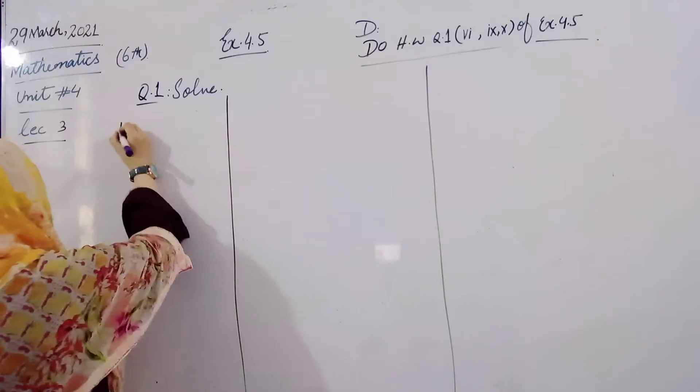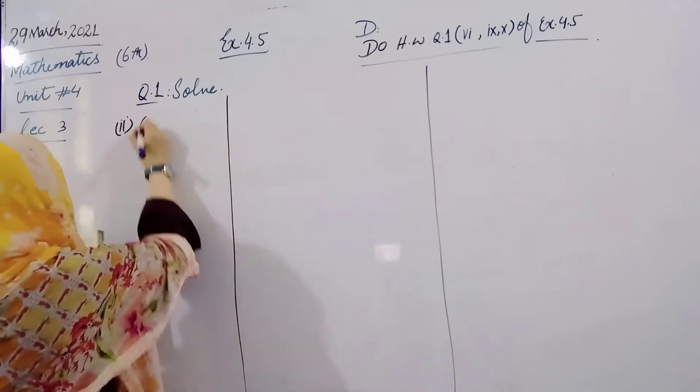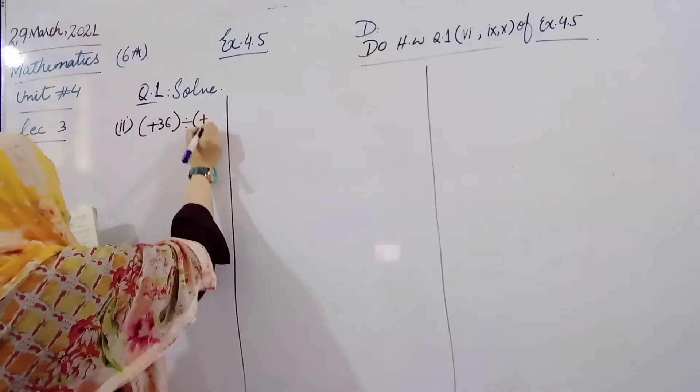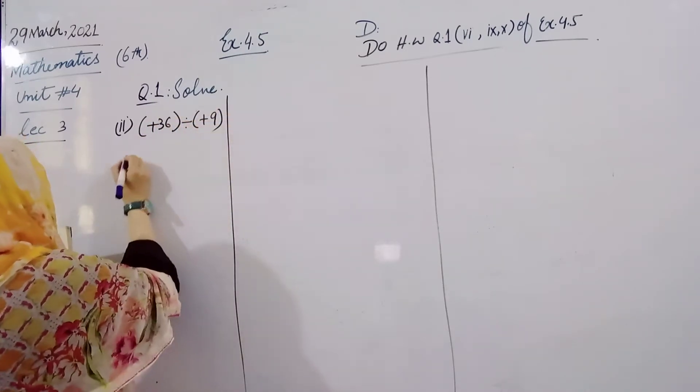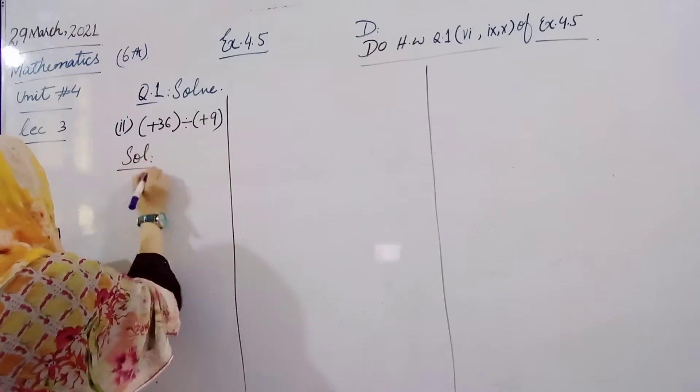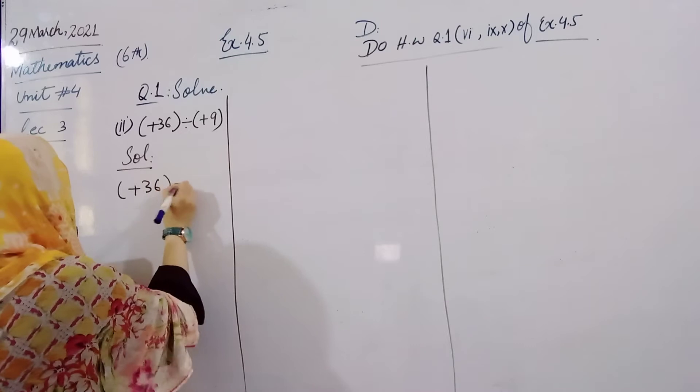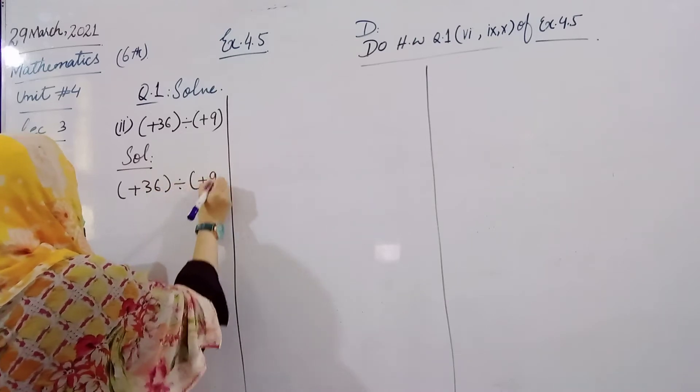Question number 1 is plus 36 divided by plus 9. Solution? Question number 1, we will rewrite: Plus 36 divided by plus 9.